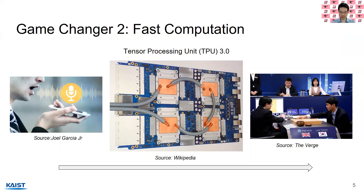TPUs are processors that can perform machine learning operations like model inference and training orders of magnitude faster than conventional CPUs and GPUs. Using this technology, Google was able to build systems like AlphaGo, which could play the game of Go really well and beat world champions.